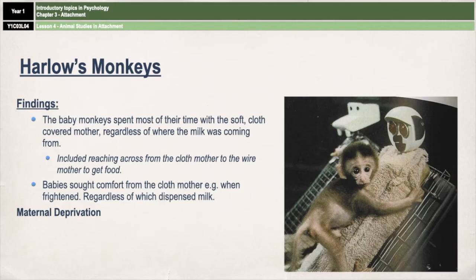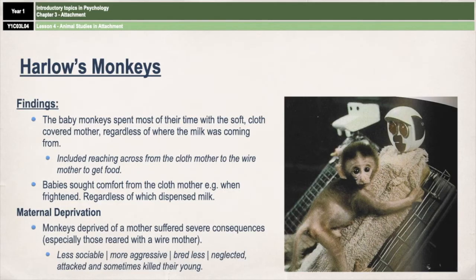One final finding was that monkeys deprived of a mother suffered severe consequences in the long term, particularly those reared with a wire mother alone. Harlow found that these monkeys grew up to be less sociable, more aggressive, and less skilled at mating. When they did mate and get pregnant, they very often neglected, attacked, and sometimes even killed their own young.